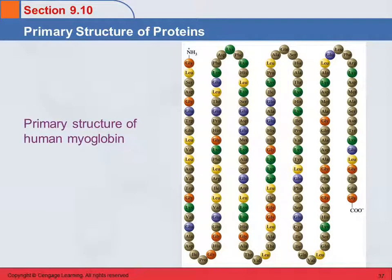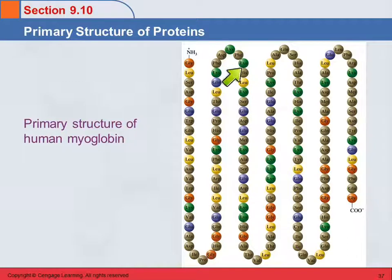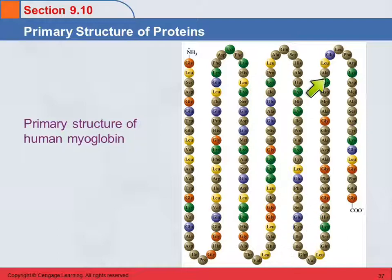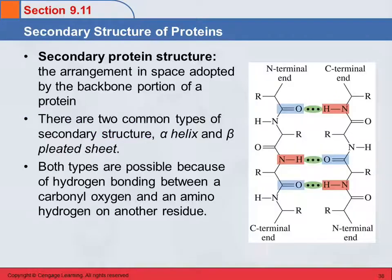Here's the primary structure of human myoglobin — you see it's just the order of these different amino acids. Now, this is not its shape; it's just arranged in this zigzag so that it fits on a slide.